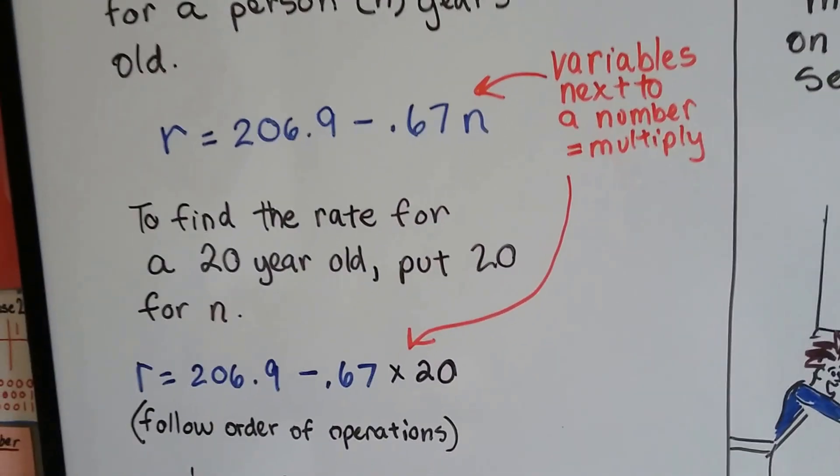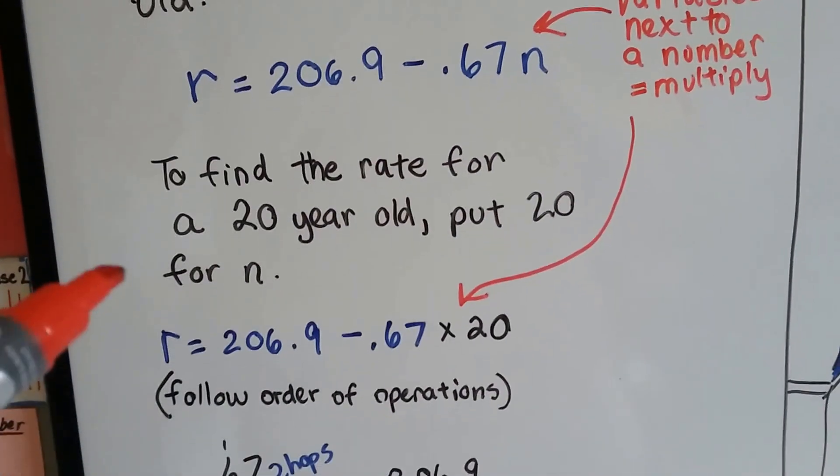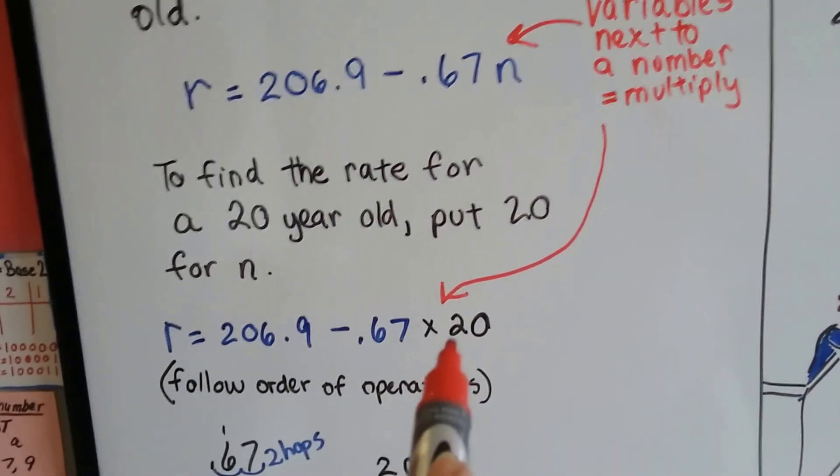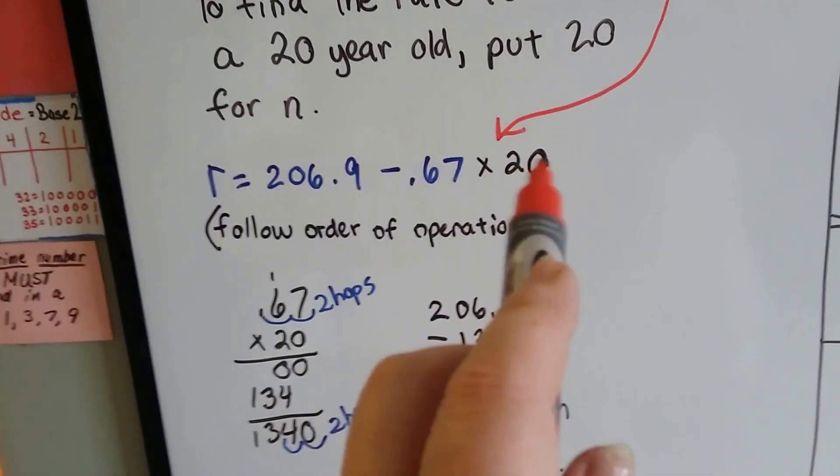So we're going to do a 20-year-old. It doesn't matter if it's male or female. It's just a 20-year-old. So to find this heart rate, we put the 20 in where the N is. Knowing that we need to multiply them, and we need to follow the order of operations, we're going to multiply first.